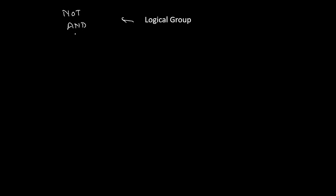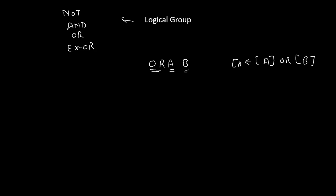Now let's see the logical group. These instructions perform operations like NOT, AND, OR, or XOR operations. For example, ORA B — ORA stands for OR accumulator with B register. We take the OR of the content of the accumulator and the content of the B register, and store the answer inside the accumulator. It is a one-byte instruction since no number is given, and OR is a logical operation.